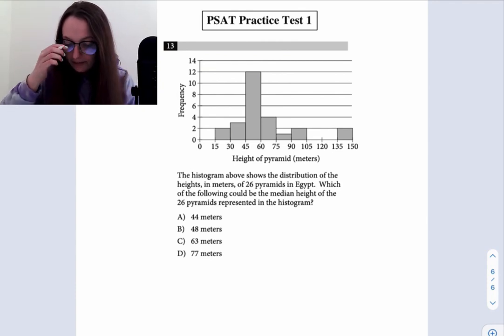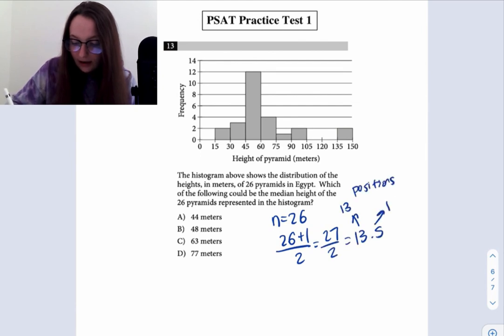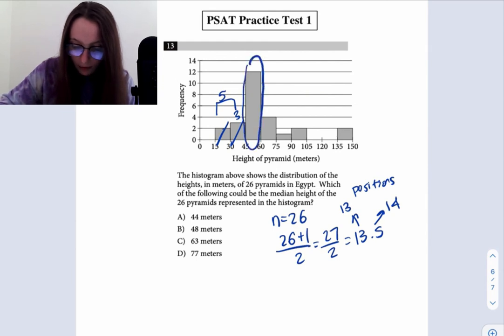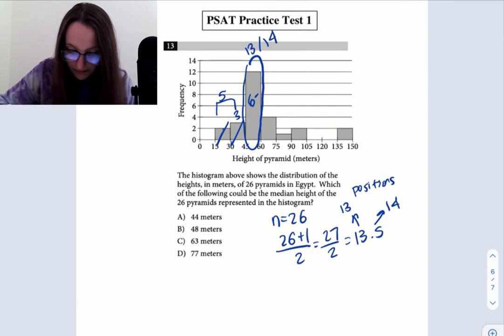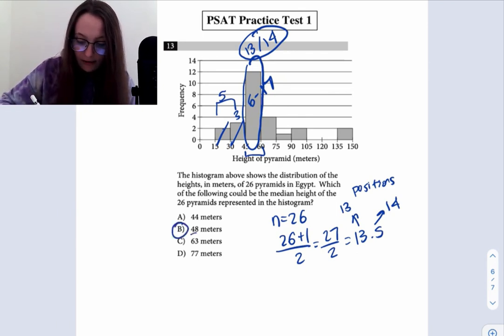Let's look at number 13. We know there are 26 pyramids, so n is equal to 26. 26 plus one divided by two gives us 27 over two, which is 13.5. So we need the average of positions 13 and 14. There are two positions here, then three here, so we've already used five positions, and then there are an additional 12 here. This one is where we're going to find both positions 13 and 14, because this one has positions six through 17. 13 and 14 are both included in this set. So it's got to be something between 45 and 60. The only choice provided that would fall within that range is choice B, 48 meters.